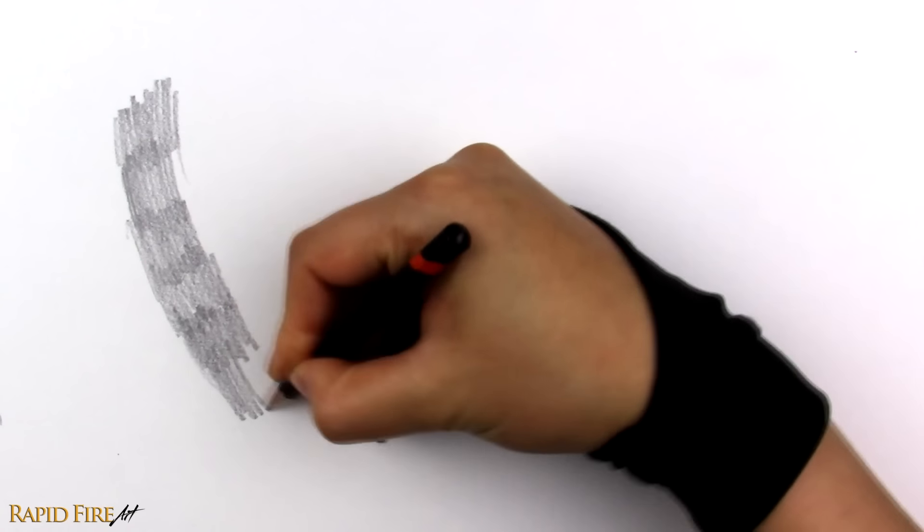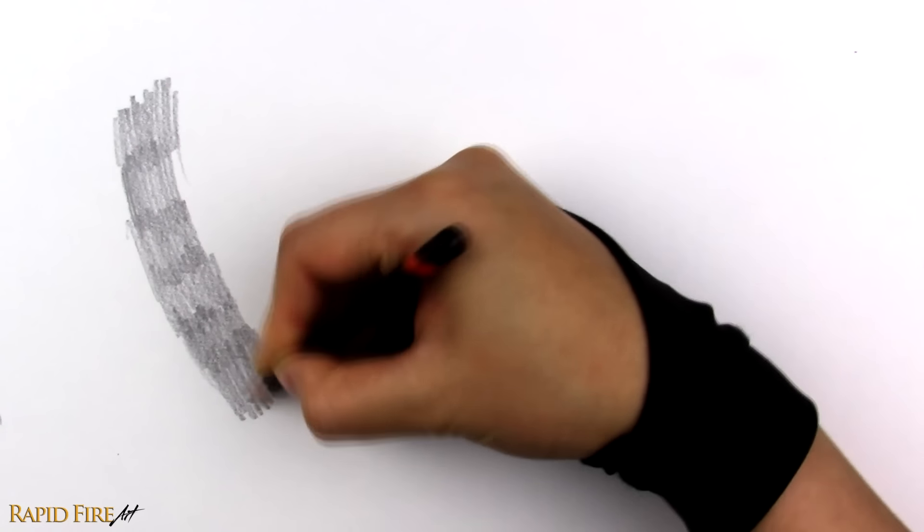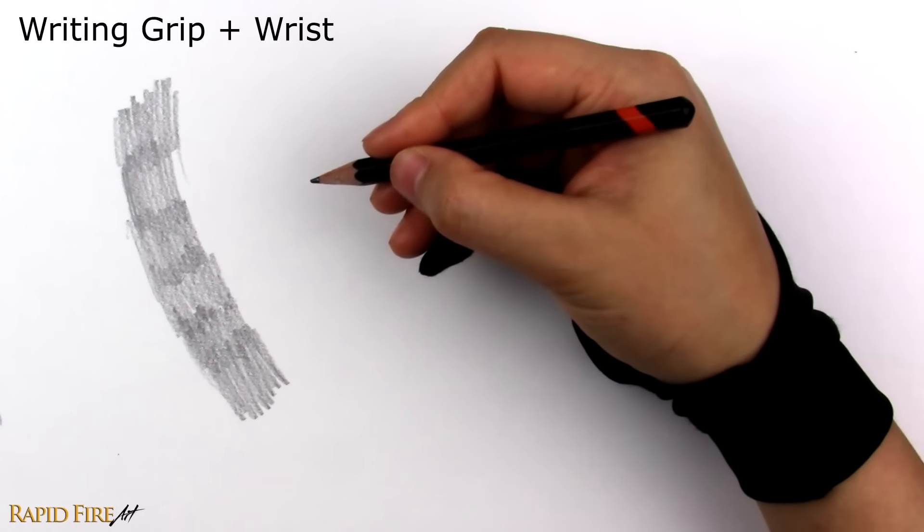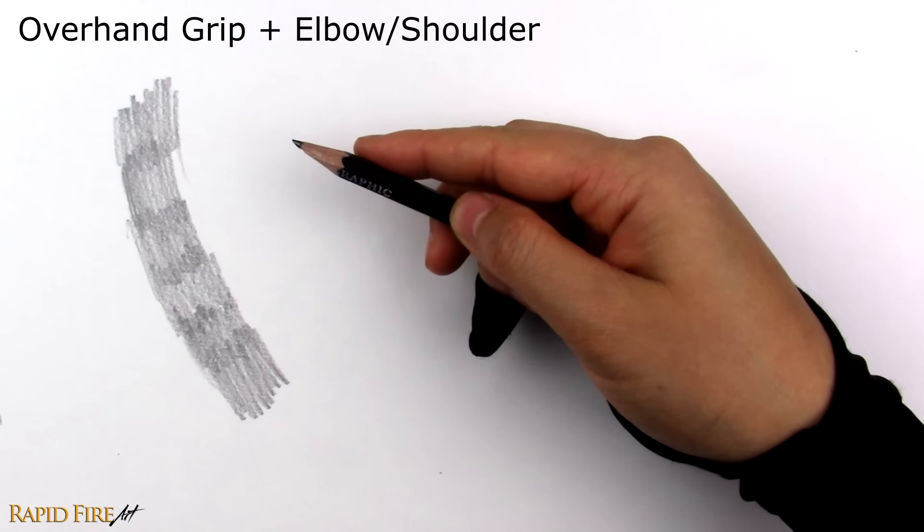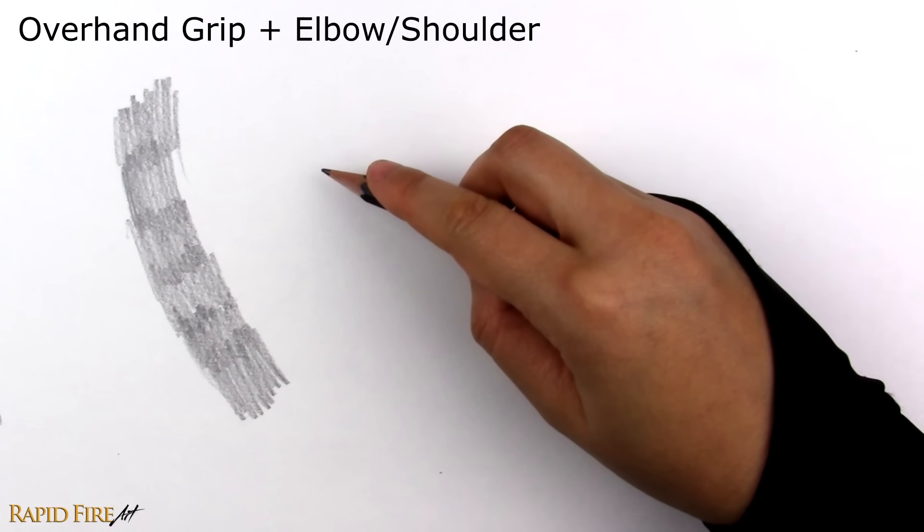If you're shading a large area and want to avoid these dark stripes, avoid using your writing grip while pivoting at the wrist. Instead, use an overhand grip and pivot from your elbow and shoulder to achieve much longer strokes.